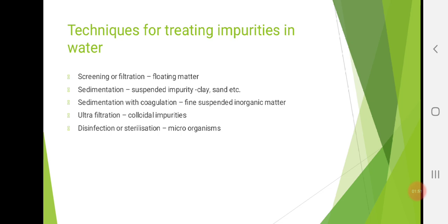If your water contains clay, sand, dust, etc., which is also known as suspended impurity, then we use sedimentation. Sedimentation means we settle down water for few hours and then the heavy particles get settled at the bottom. If your water contains fine suspended inorganic matter like silica, mica, fine dust, then sedimentation with coagulation. If your water contains colloidal impurities, then we use filtration or ultrafiltration. And if your water contains microorganisms or pathogenic bacteria which are not seen by your naked eyes, then we go with disinfection or sterilization technique. These are the different impurities and for removing these impurities, we use different techniques.